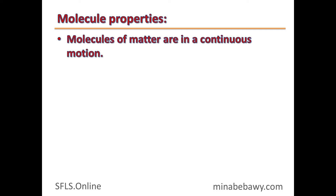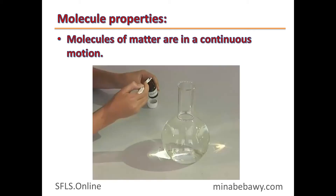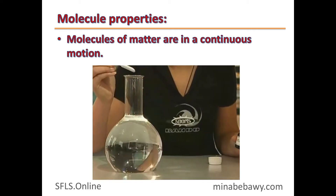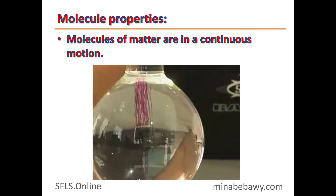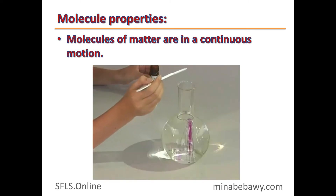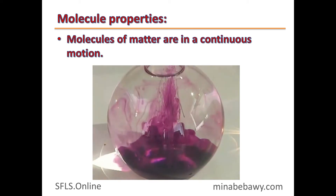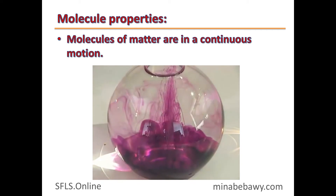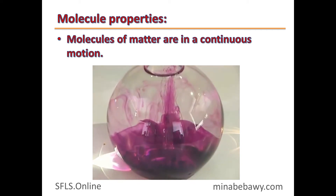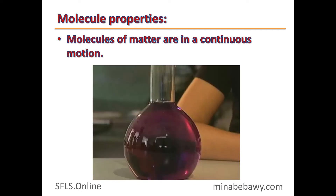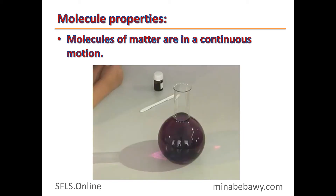Let's do some experiments to prove that molecules of matter are in continuous motion. If we put a small amount of potassium permanganate, which has a violet color, in a container that contains water, we will see that its color will spread all over the water until the color of the water changes to violet.